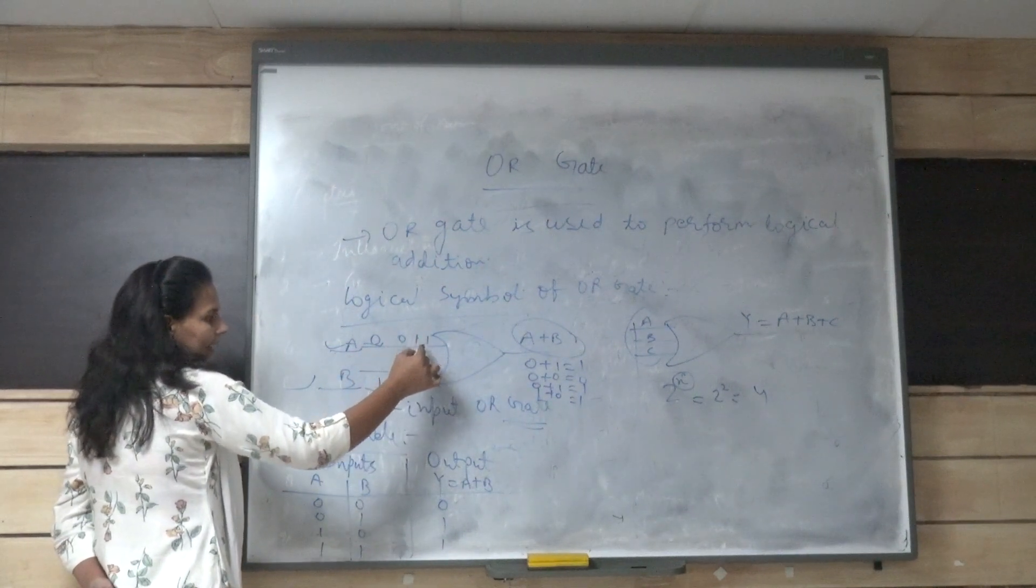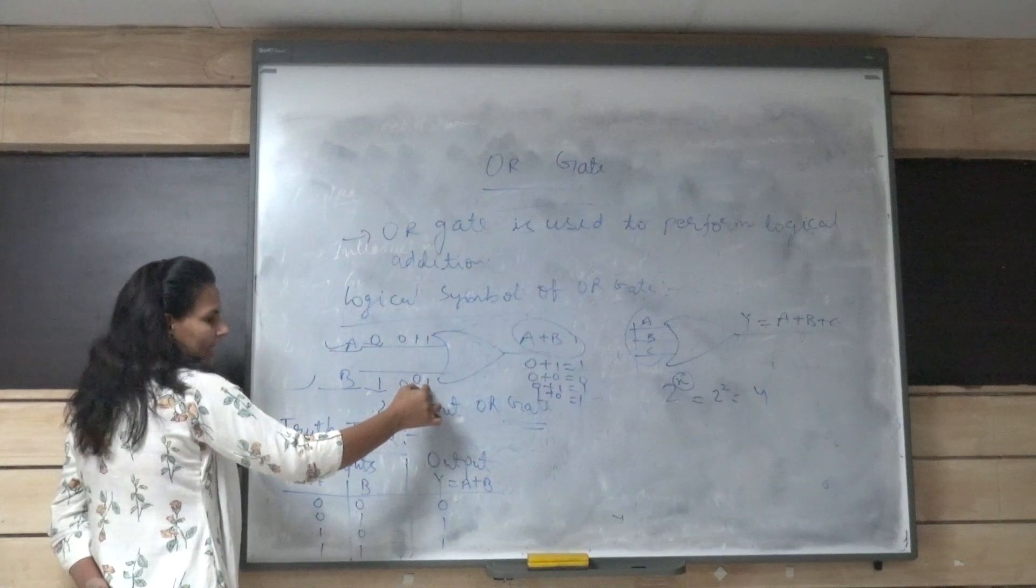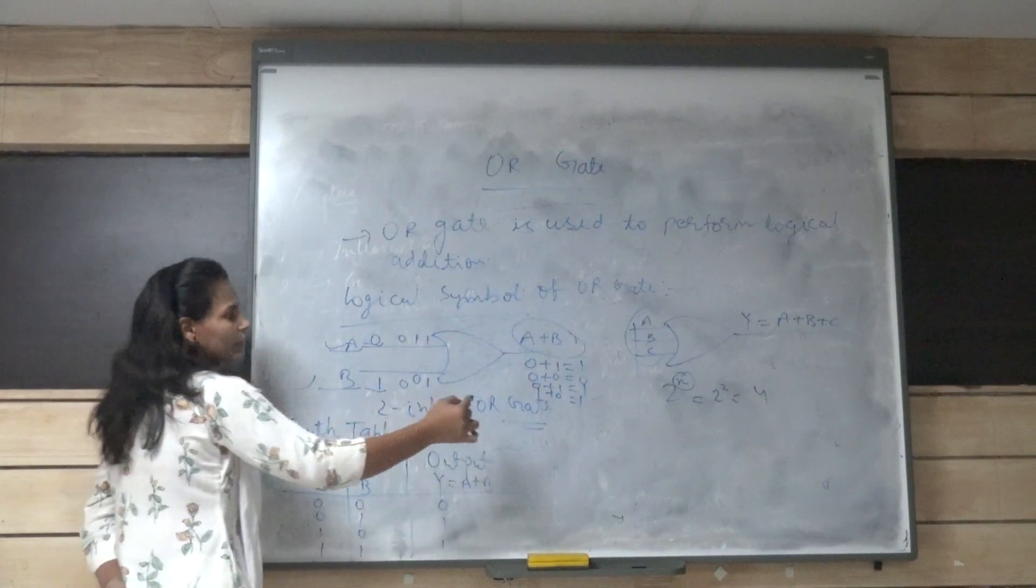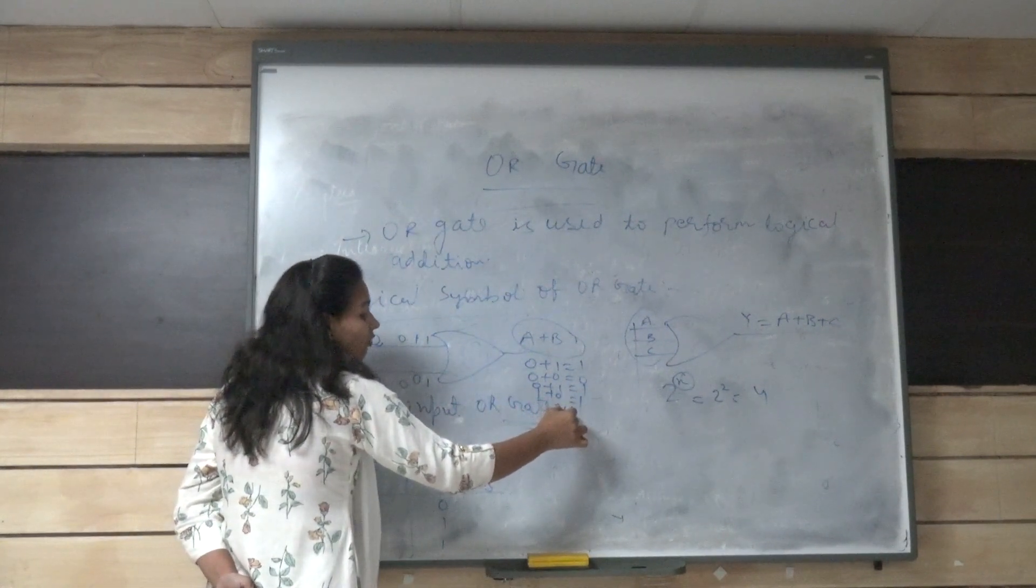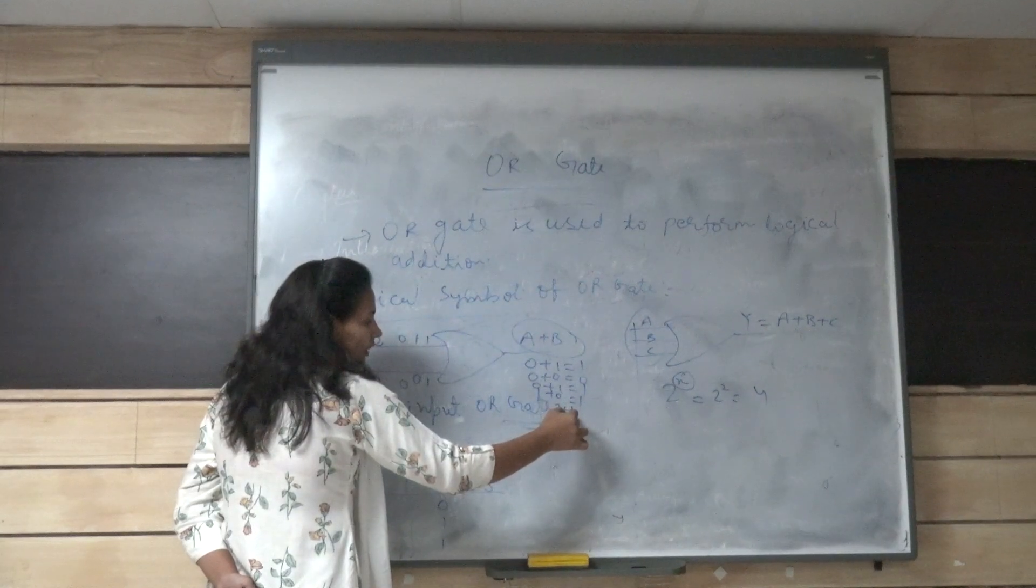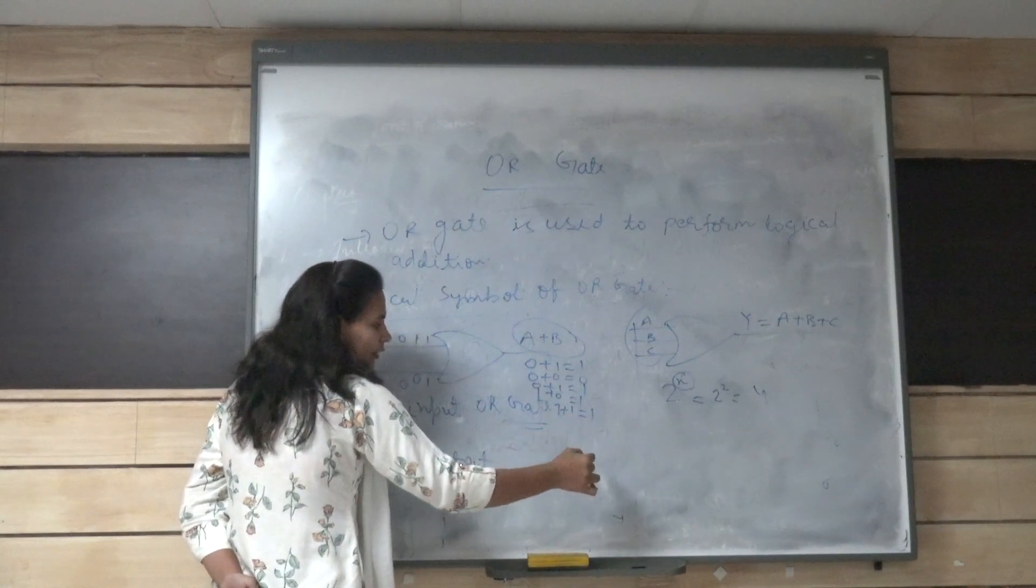When A is 1 and B is 1, then the output of OR gate will be 1 plus 1. So 1 plus 1 in the OR gate will be 1, not 2.